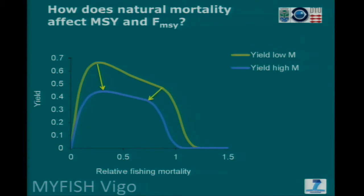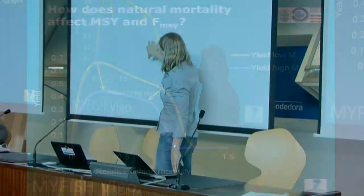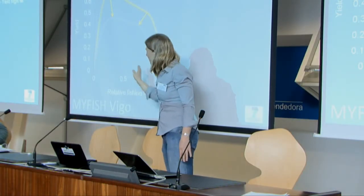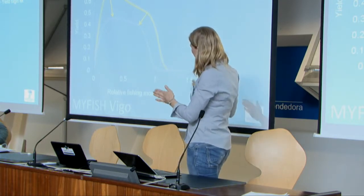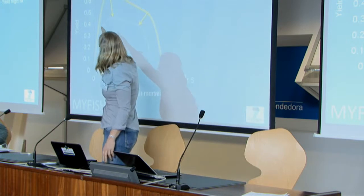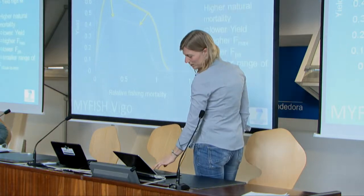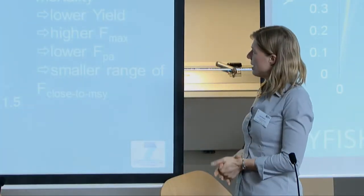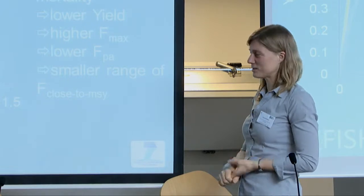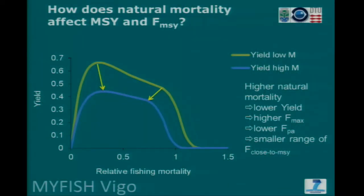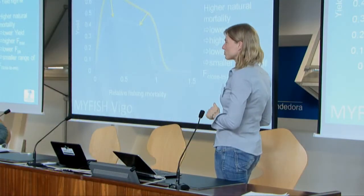But you also get another effect. Over here, you get a move of the point that you really didn't want to go to — the point where you get recruitment failure. That also narrows. So altogether, you get a much narrower range of the plateau that Sidney talked about. Here you have a really wide plateau on the purple one; the plateau becomes much narrower. So to summarize: more natural mortality gives lower yields, higher max points of the curve, a lower threshold before recruitment failure, and a smaller range of fishing mortalities that will give you something close to MSY.